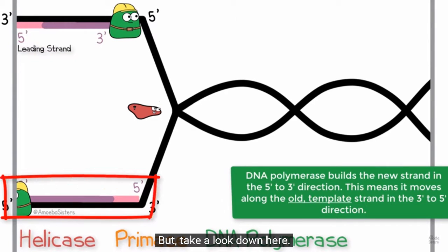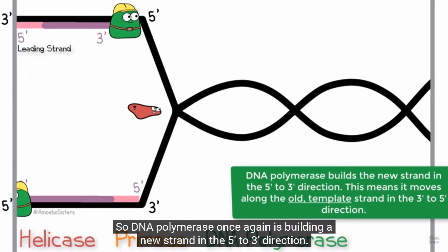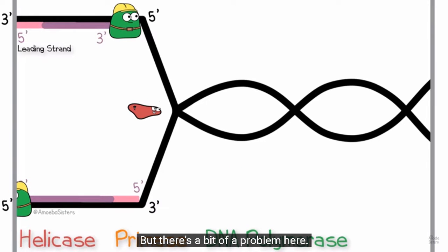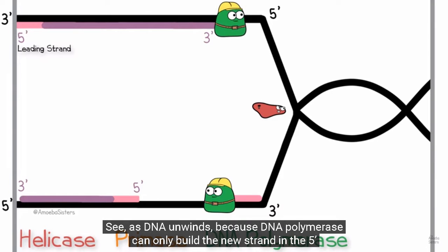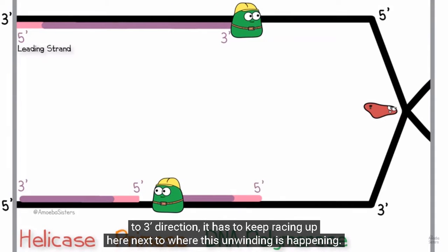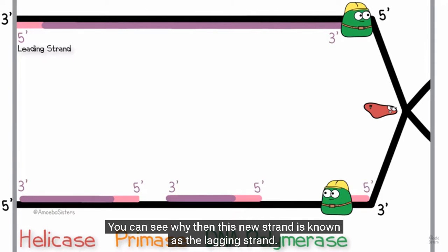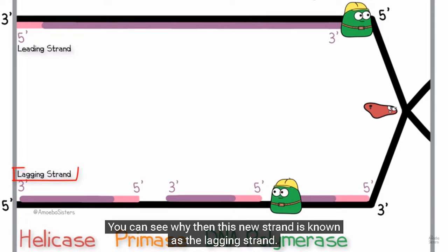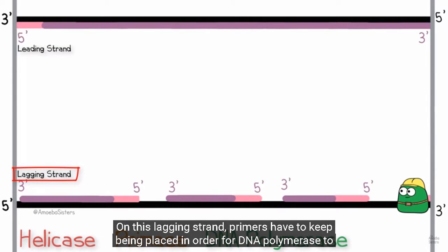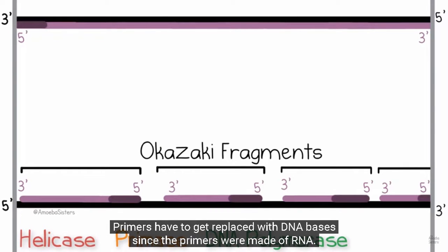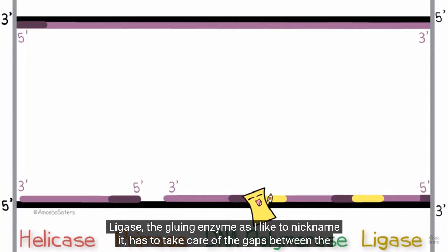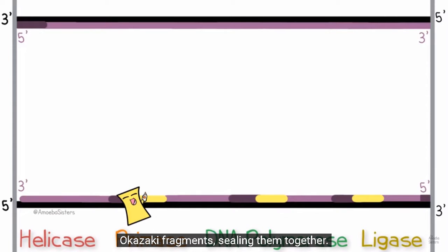But take a look at the other strand. DNA polymerase is building a new strand in the 5' to 3' direction, but there's a problem: as DNA unwinds, because DNA polymerase can only build in the 5' to 3' direction, it has to keep racing back to where the unwinding is happening. That's why this new strand is known as the lagging strand. On the lagging strand, primers have to keep being placed for DNA polymerase to build. The resulting fragments are known as Okazaki fragments. Primers get replaced with DNA bases since the primers were made of RNA, and ligase seals the gaps between Okazaki fragments.